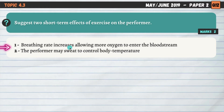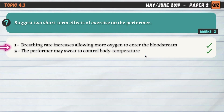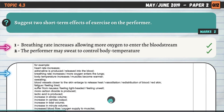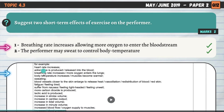I went for breathing rate increases, allowing more oxygen to enter the bloodstream — it's always a good idea to add that little bit of extra explanation to guarantee the mark. The second point: the performer may sweat to control body temperature. Those explanations weren't actually required for the mark. It's the same mark scheme as before.